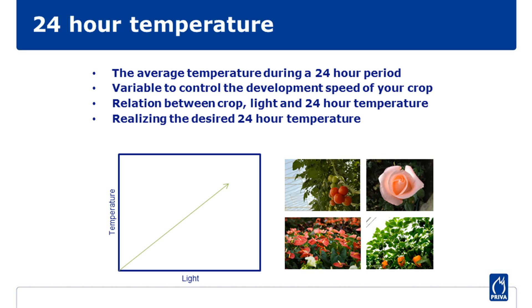Control the speed of your cultivation using the 24-hour temperature control. The daily temperature — the average temperature over 24 hours — determines the speed of development of your crop. The 24-hour temperature is therefore a good parameter to control your crop and steer it.